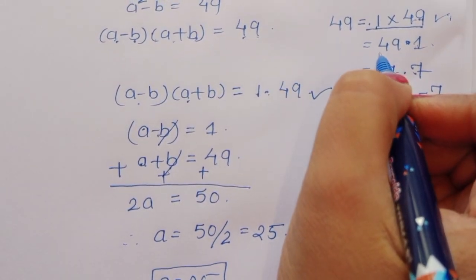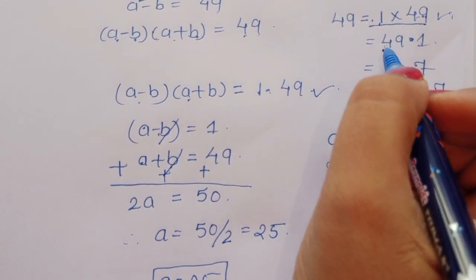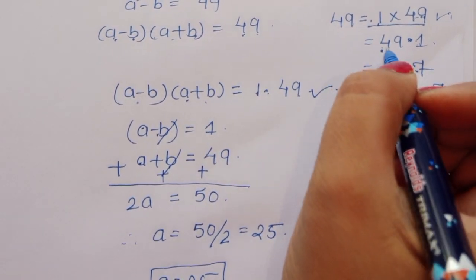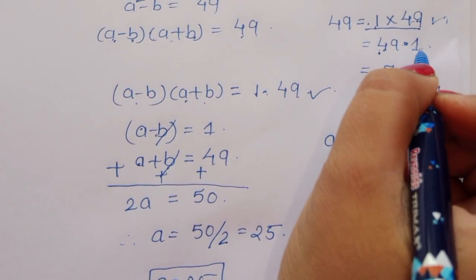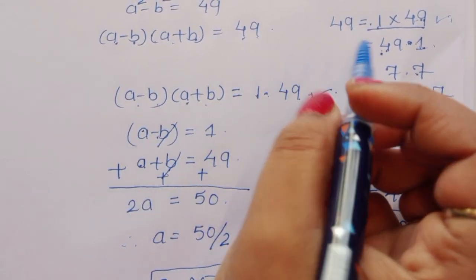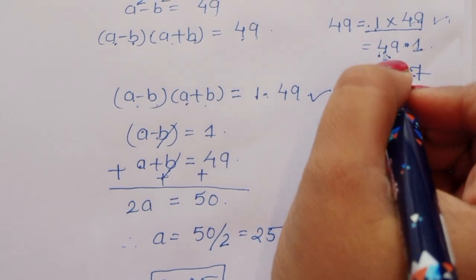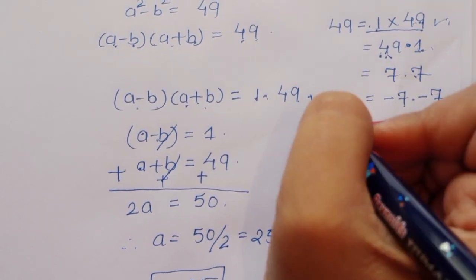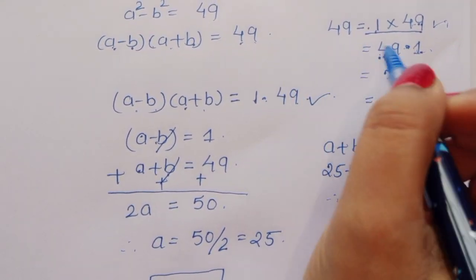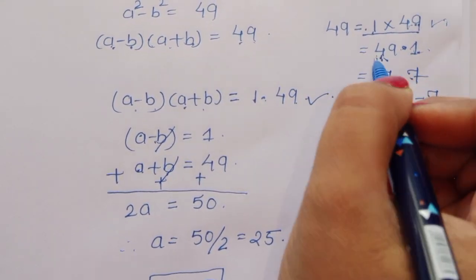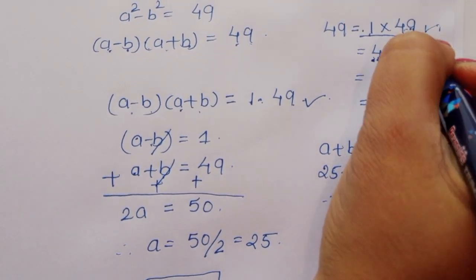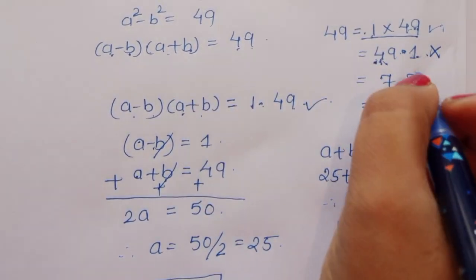In the next condition, (a minus b)(a plus b) equals 49 times 1. Here a minus b would be 49 and a plus b would be 1, meaning a minus b is greater than a plus b. This condition does not hold, so it is rejected.